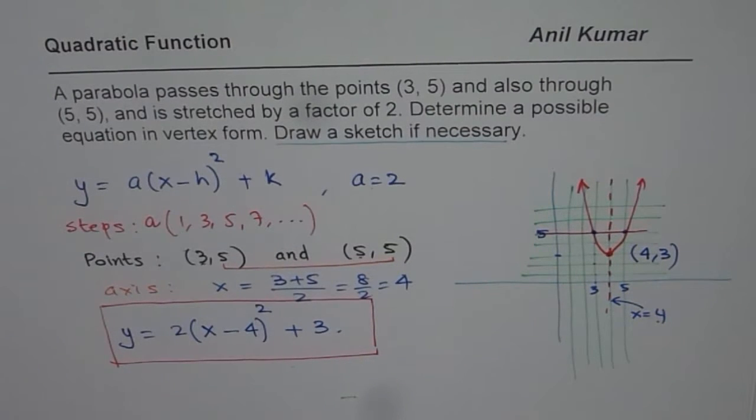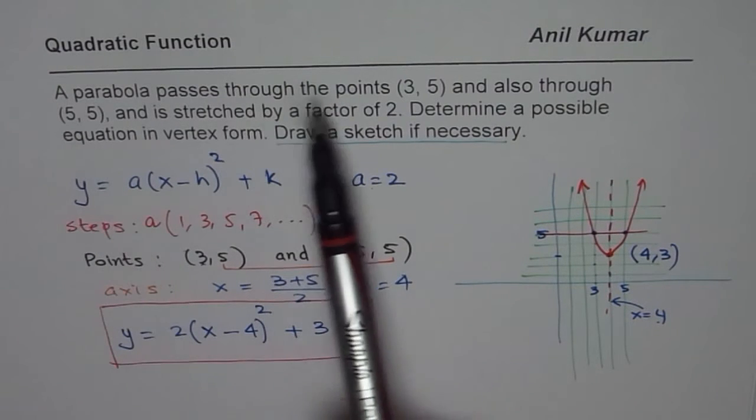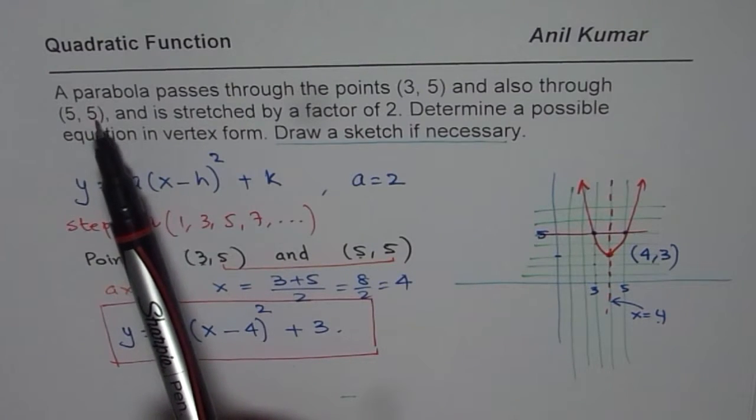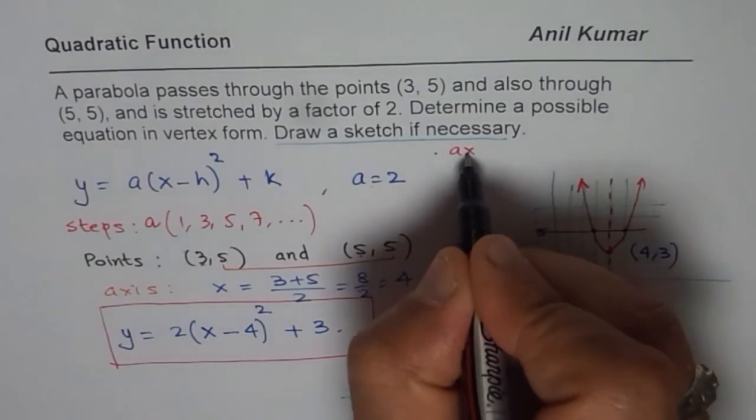I hope you have understood the steps involved in getting to this equation. Now, let us look back into what we did. Read the question once again. A parabola passes through the points (3, 5) and also through (5, 5) and is stretched by a factor of 2. Determine a possible equation in vertex form. Draw a sketch if necessary. So, whenever you are given 2 points with same y value, in that case, we can straight away find the axis.